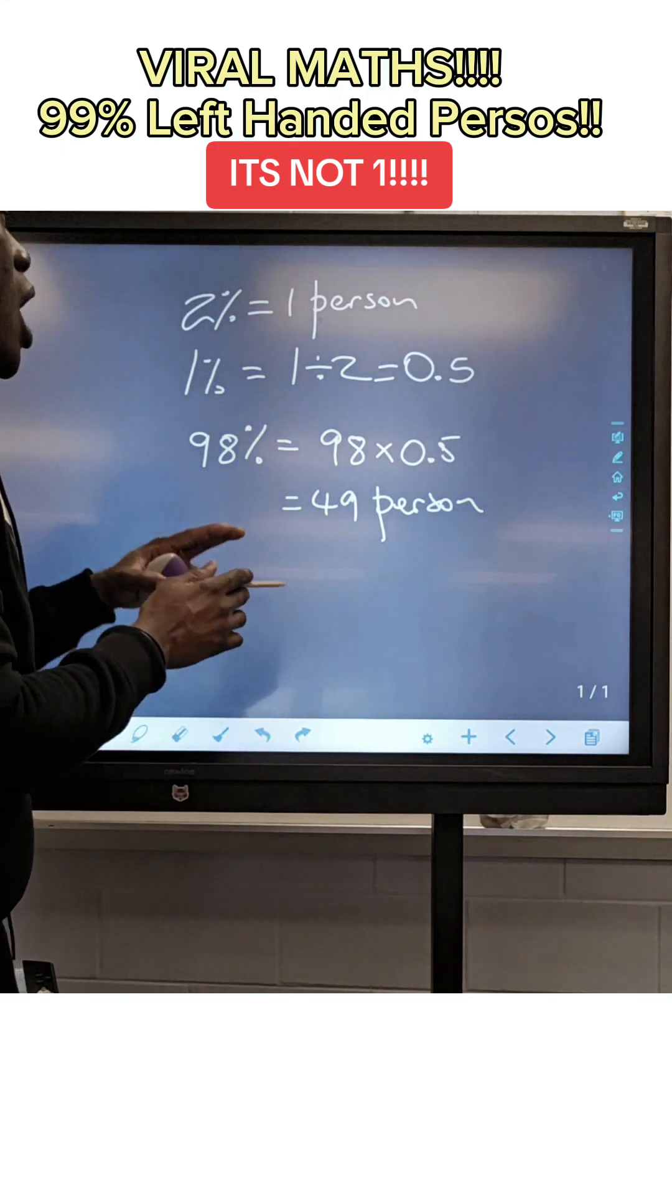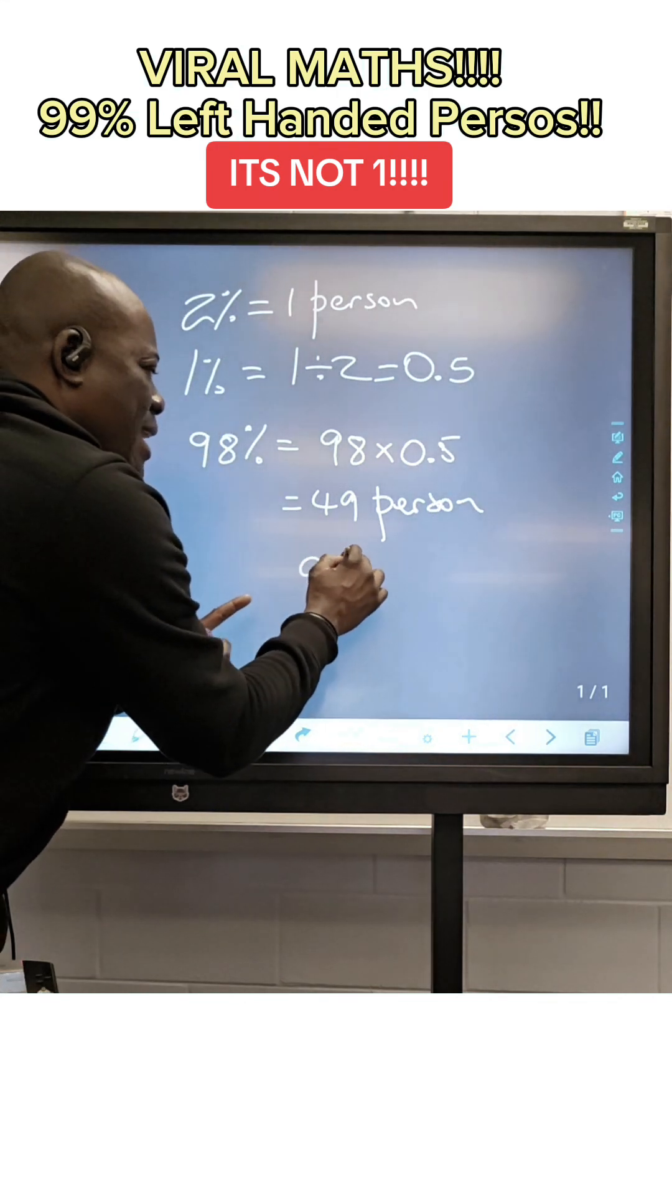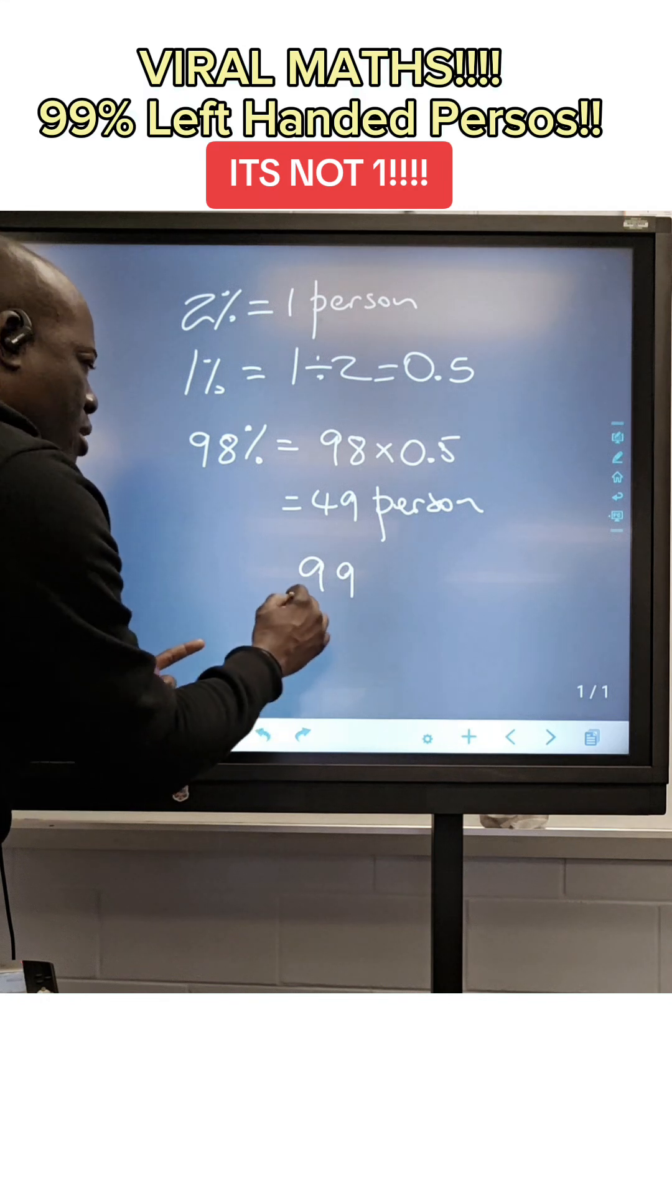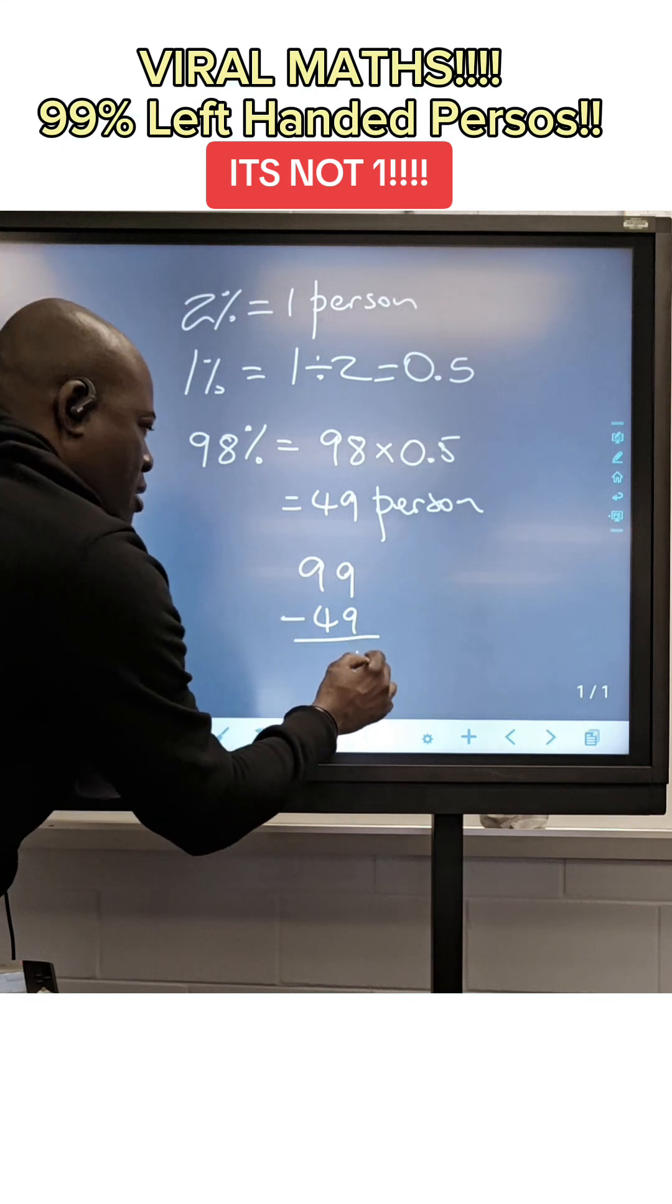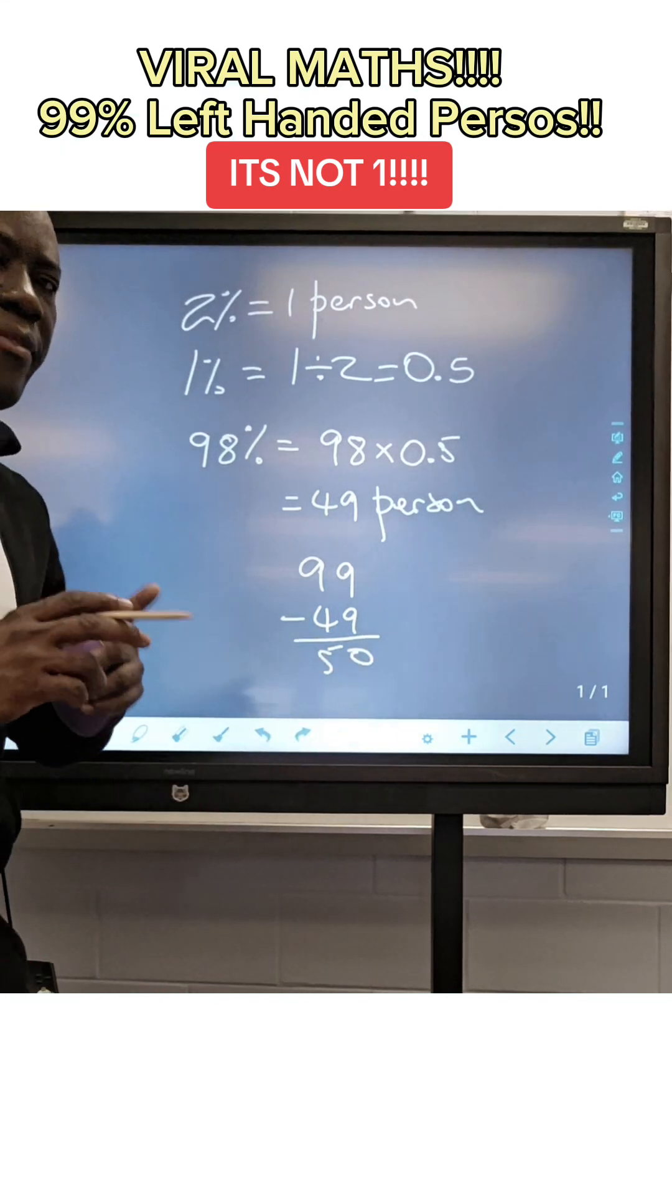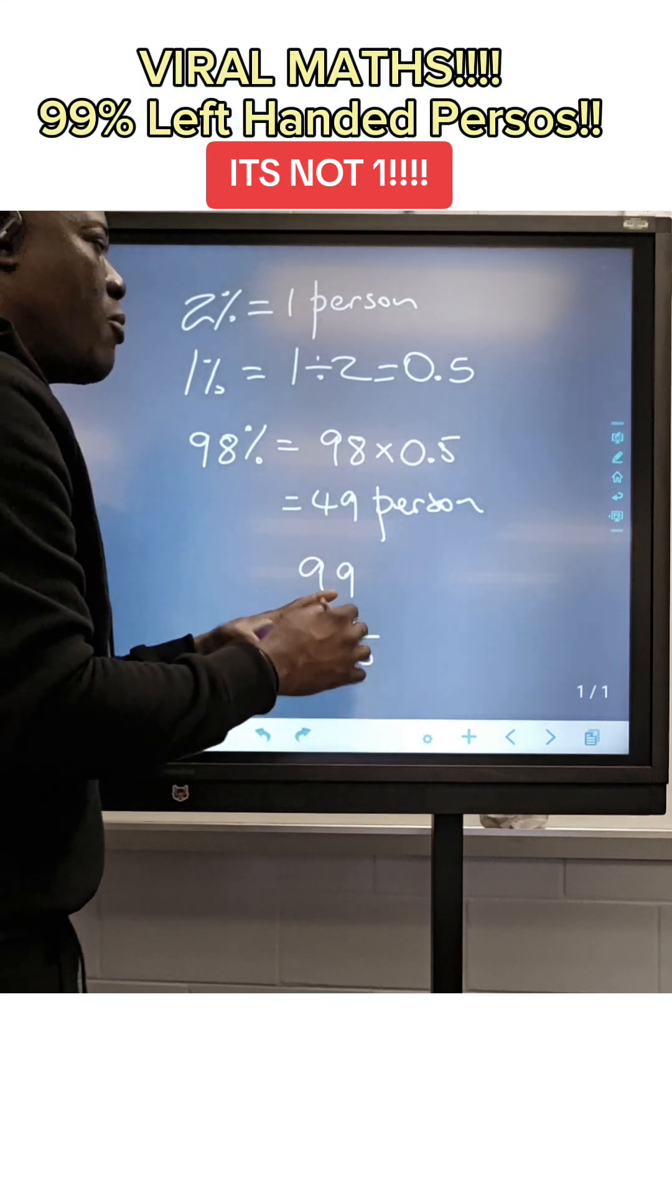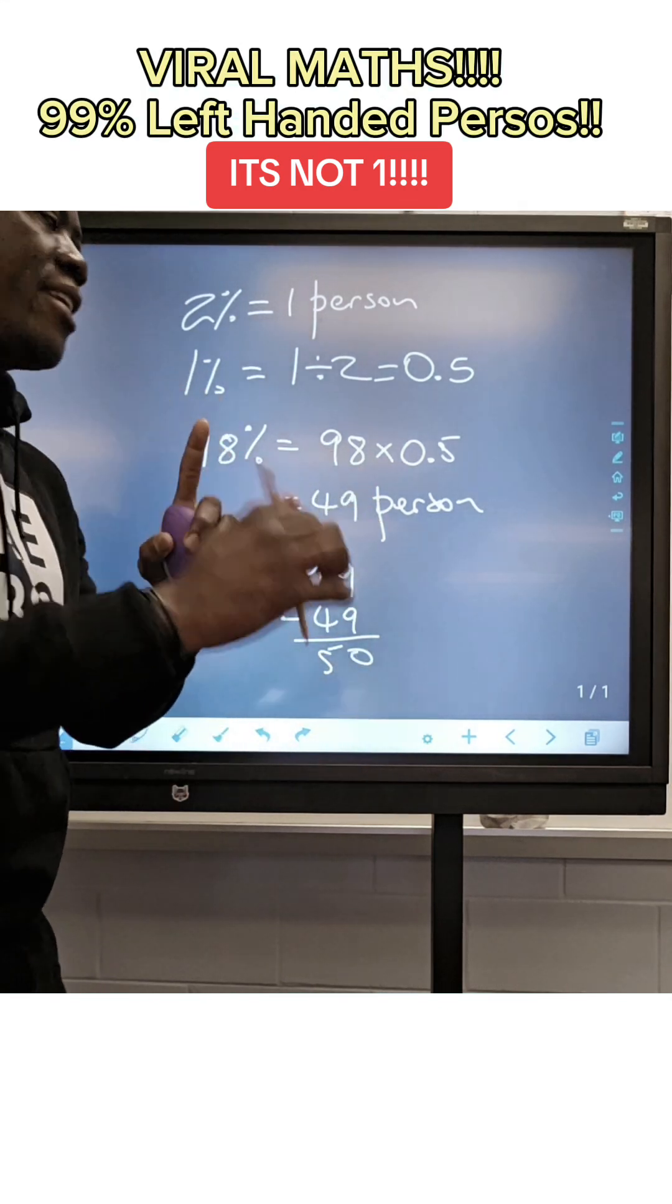Therefore, how many persons need to leave the room? 99 left-handed persons were there. We're going to take away 49 from it to see how many. 50. So 50 left-handed persons need to leave the room such that we are left with 49 of them.